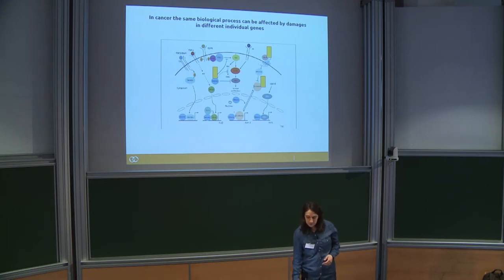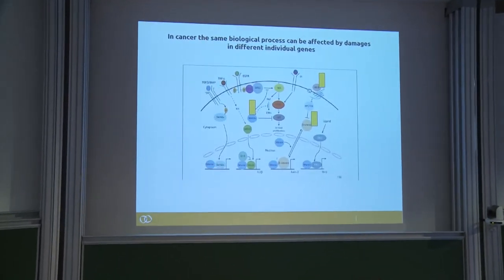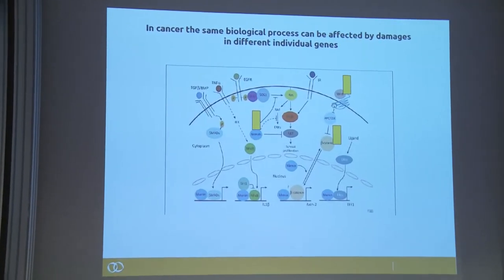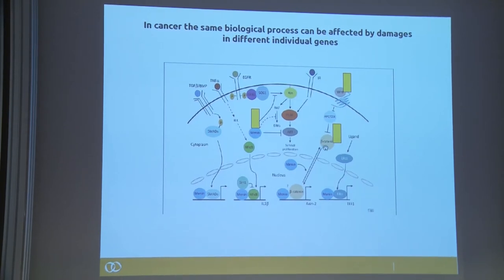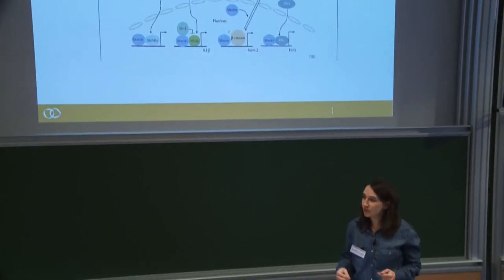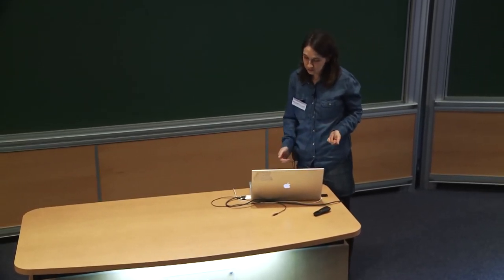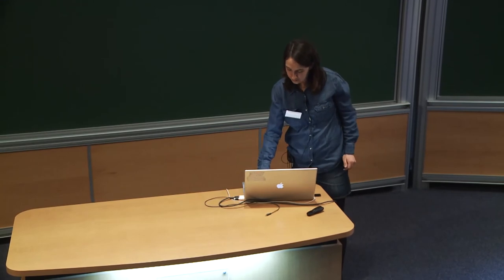The same signaling pathway can be affected in one patient at the membrane level, while in another patient the same pathway is affected at another molecule further downstream. So the same signaling pathway is affected, but these samples are more comparable at the pathway level rather than at the single gene level. This is why gene set approaches are becoming more and more used to dissect this type of data.